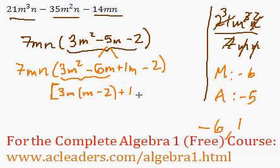So I can put a 1 over here, and multiply by m minus 2. Because 1m divided by 1 is m, and -2 divided by 1 is -2. And there's still the 7mn.